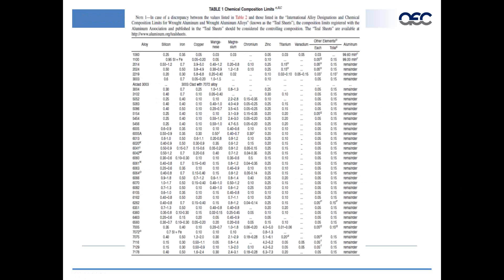Here's an example of Table 1, which exists in both B221 and B221M. The numbers are in weight percent. It does not include all the footnotes — there are about a page and a half of footnotes in B221. These are the alloys covered by B221, and more alloys will be added over time.